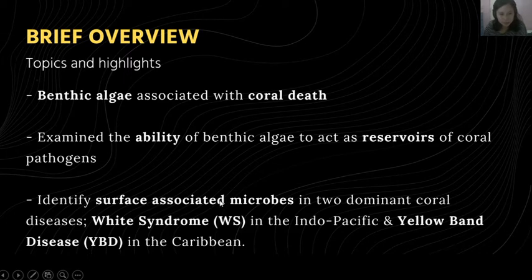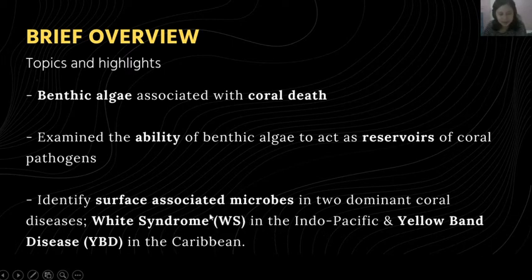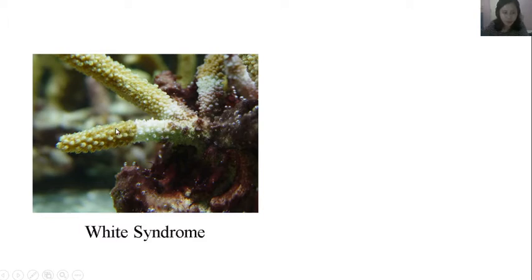The very first step they needed to take was to identify the surface-associated microbes in two dominant coral diseases, which are very prominent in the Indo-Pacific and in the Caribbean. In the Indo-Pacific, we have White Syndrome (WS). Here we have a picture of a coral, specifically an Acropora species, suffering from White Syndrome, which can also be called White Band Disease. It is very distinguishable because it forms a white band around dead coral tissue.